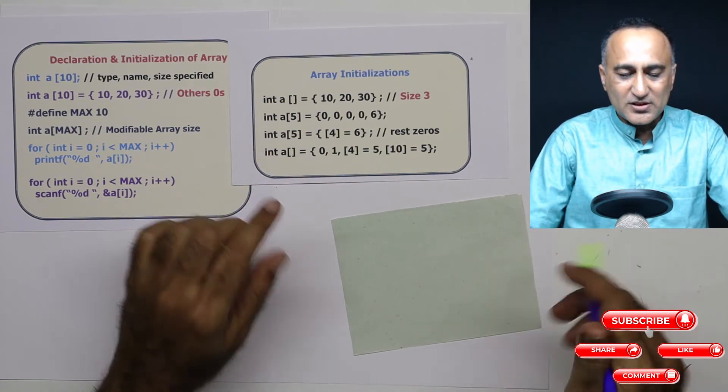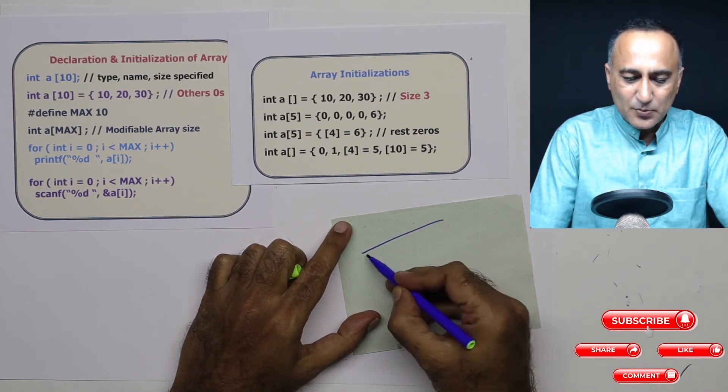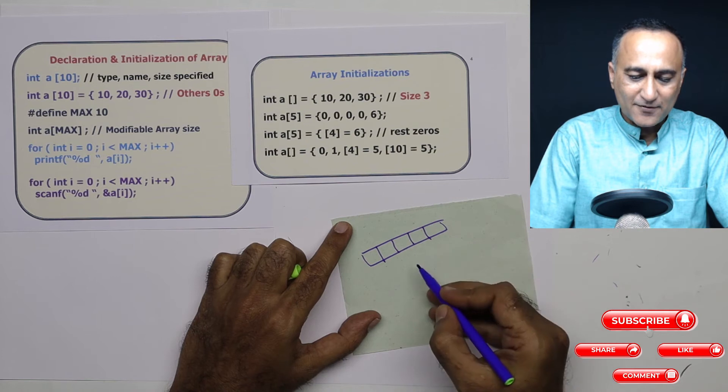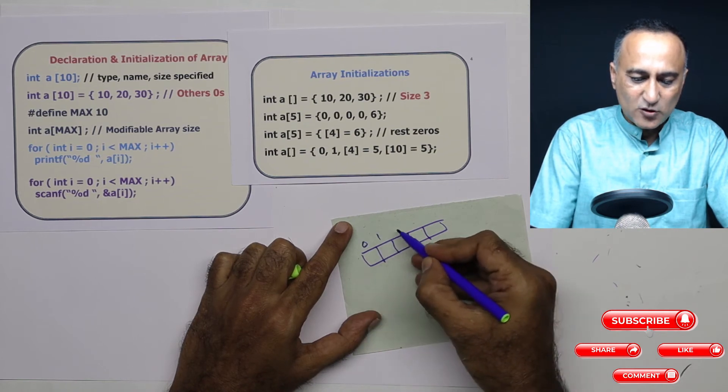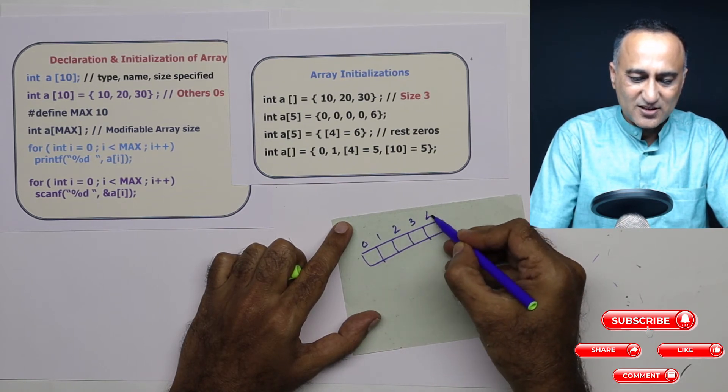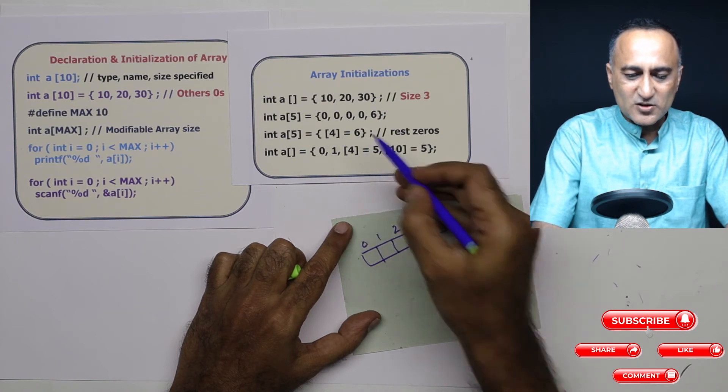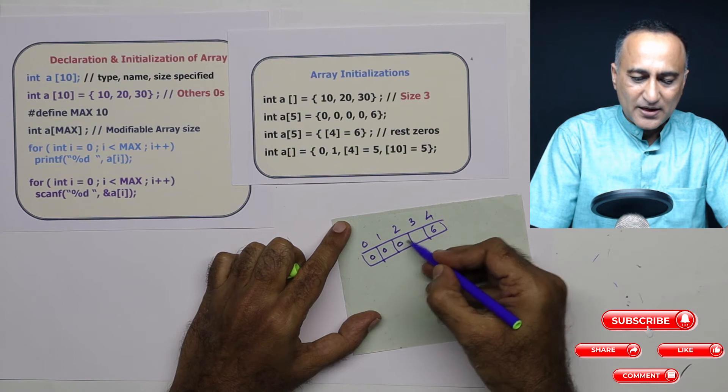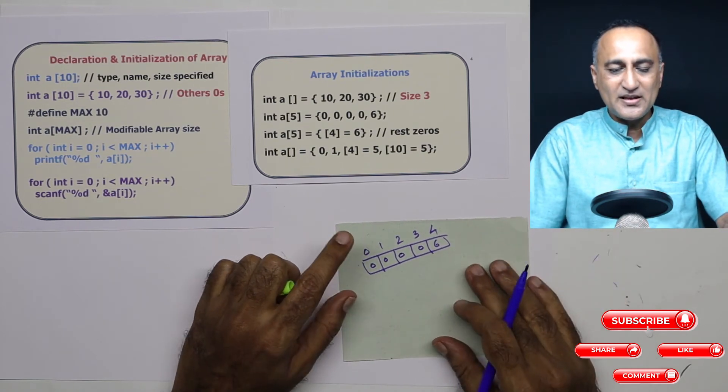So if you want to take a look at how this declaration what it will create, suppose this is my array. One, two, three, four, and five, these are five places. This is the zero, this is the first, this is the second, this is the third, this is the fourth. So what I have done is to the fourth location I have put six. The rest of them automatically will get initialized to zero by the compiler.